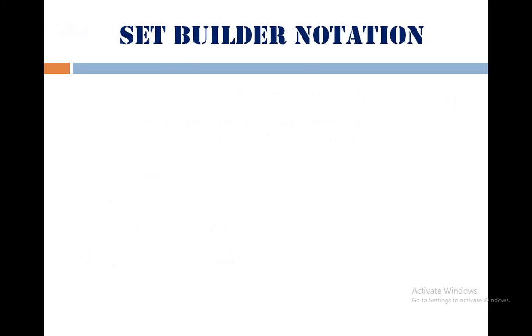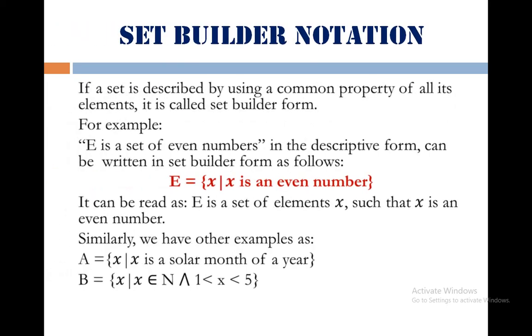The third form is set builder notation. If a set is described by using a common property of all its elements, it is called set builder form. Example: E is the set of even numbers, this is the descriptive form.